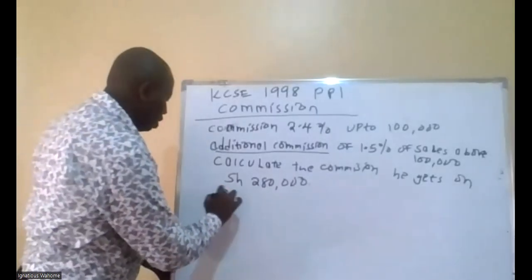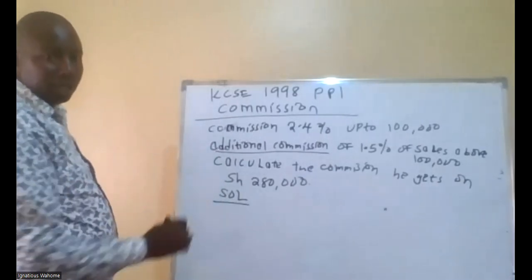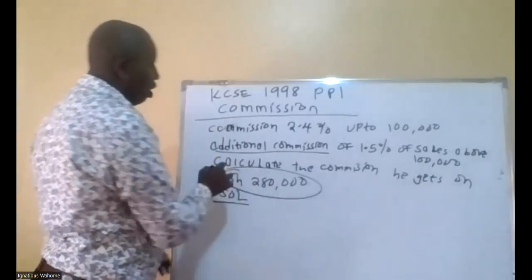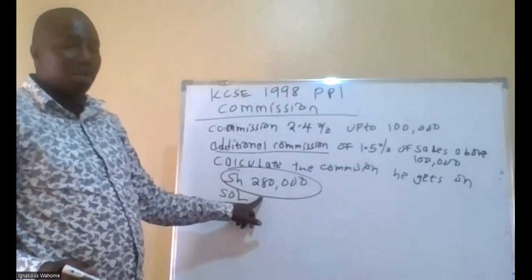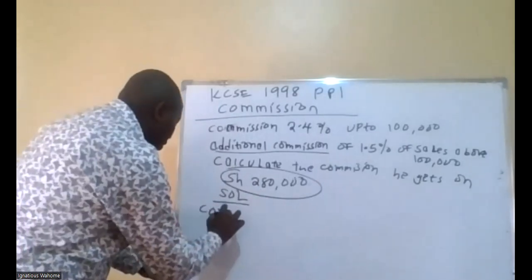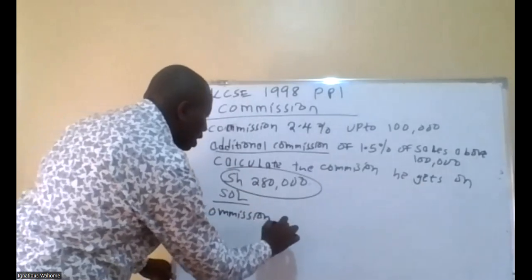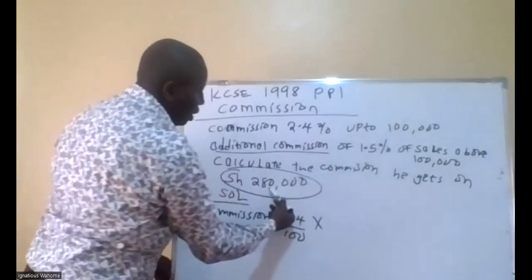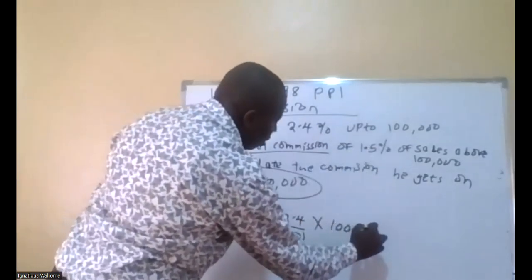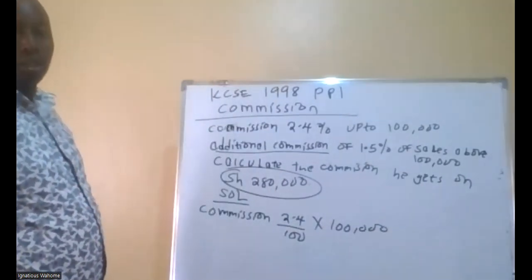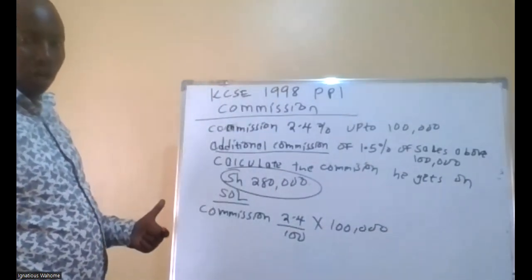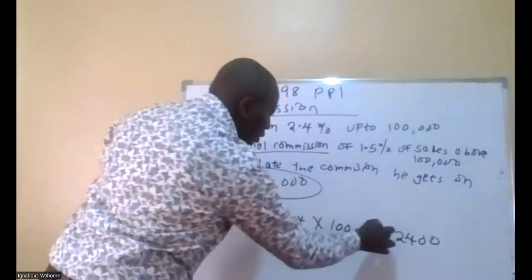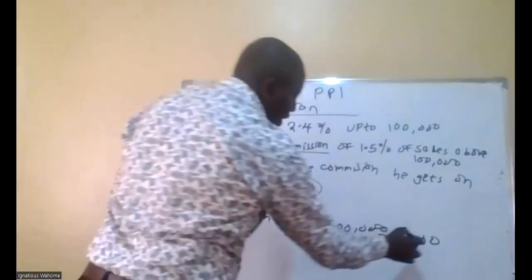For the solution, the sales are already above 100,000 because it is 280,000. So the first commission will be 2.4 over 100 of sales up to 100,000. Because this is 280,000, we first calculate for the first 100,000. So 2.4 over 100 of 100,000 comes to 2,400. That's the first commission.